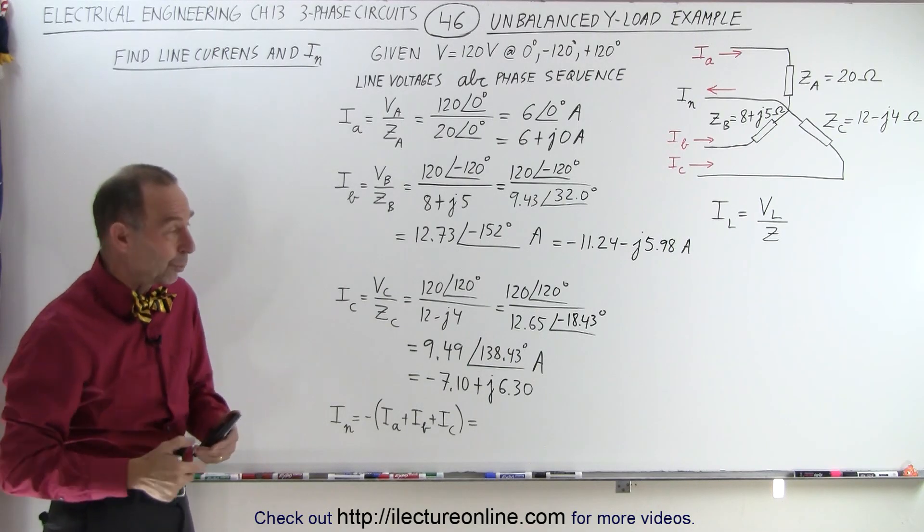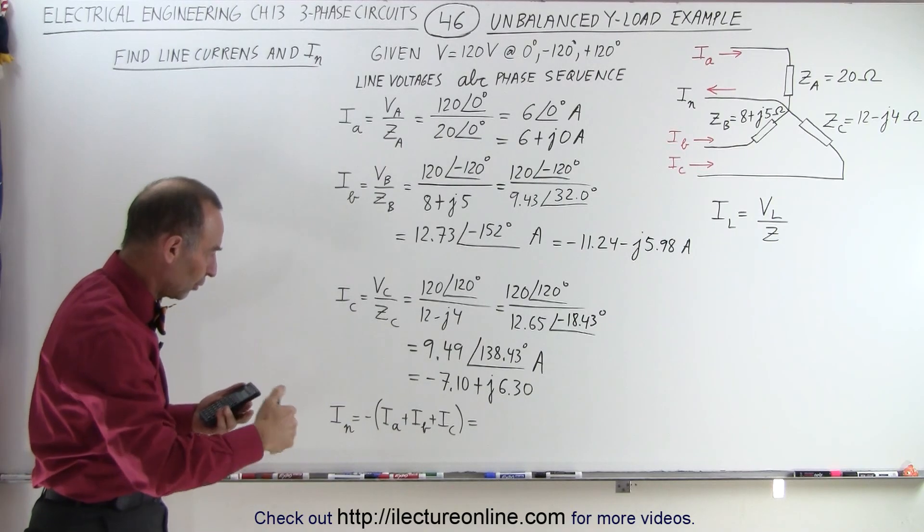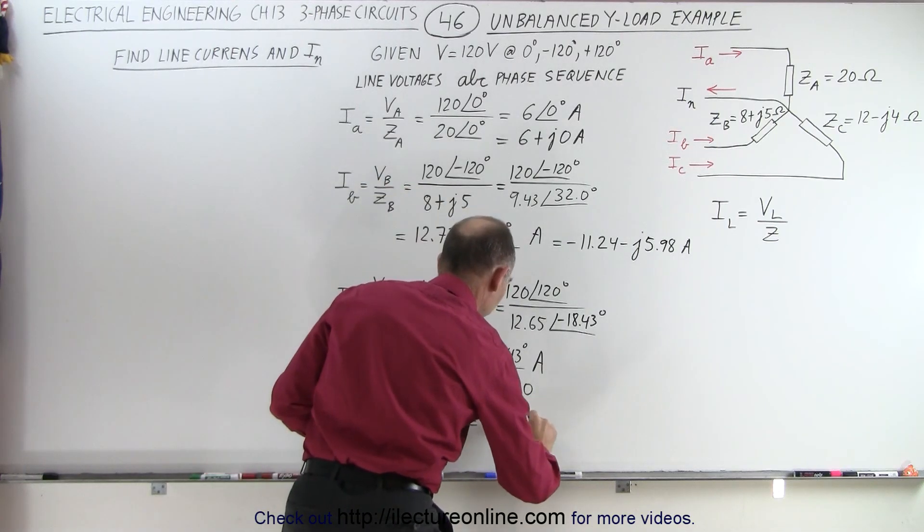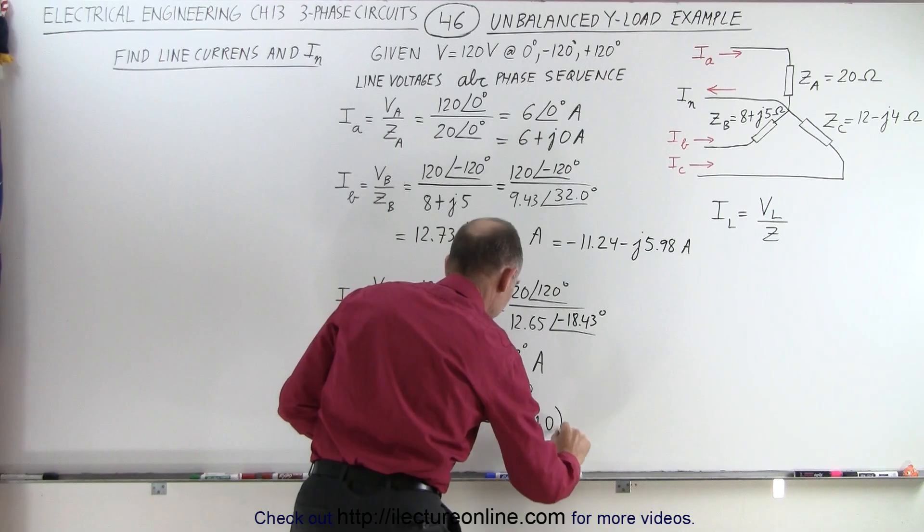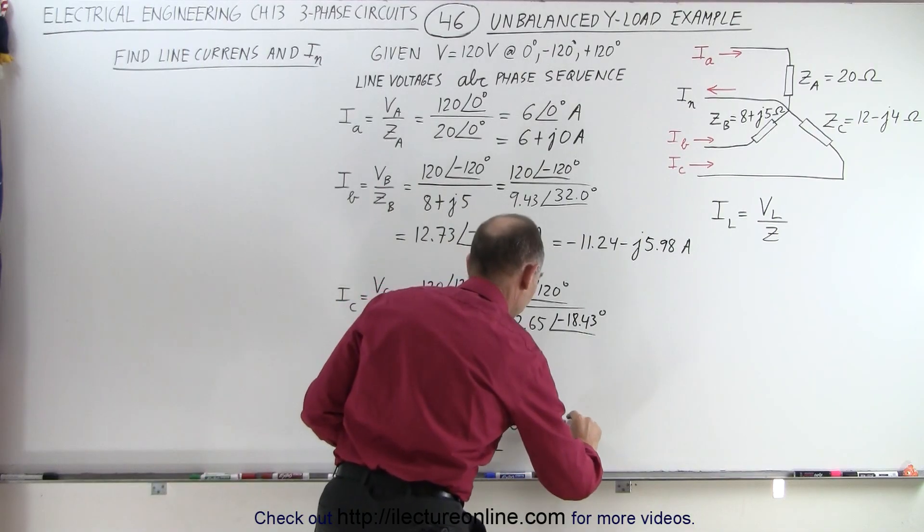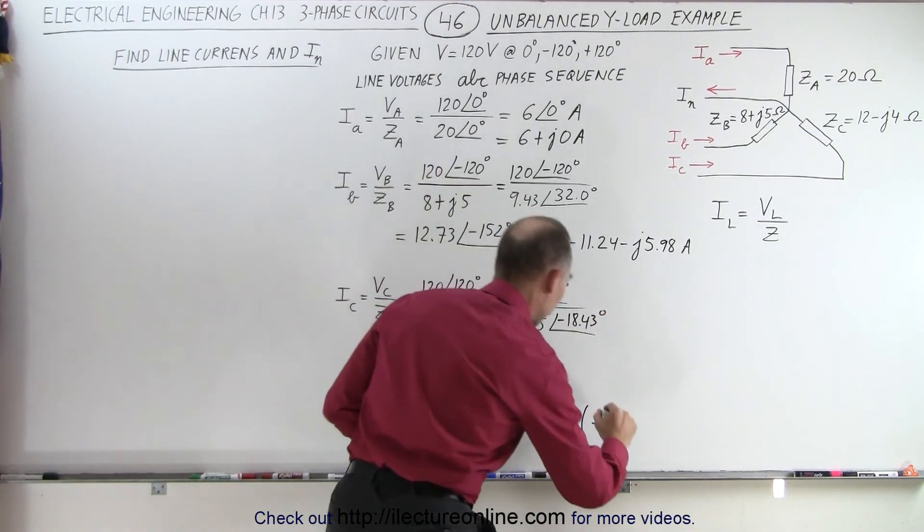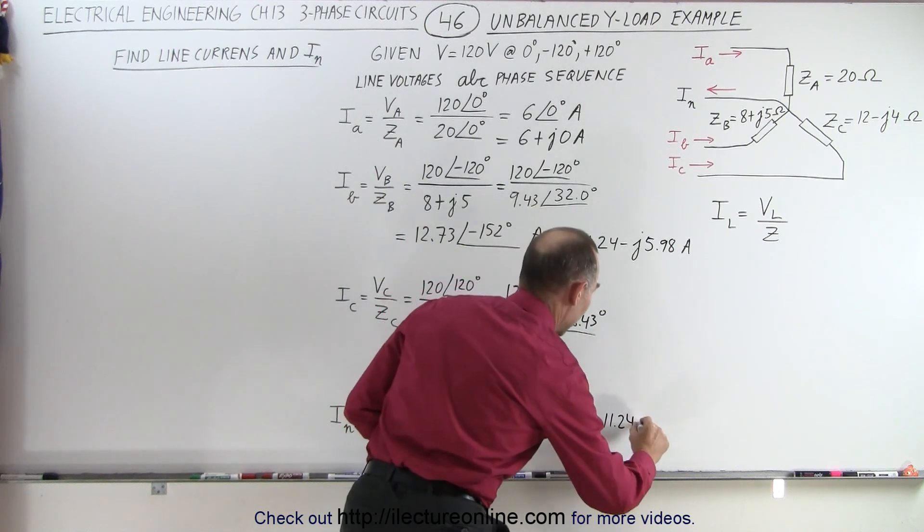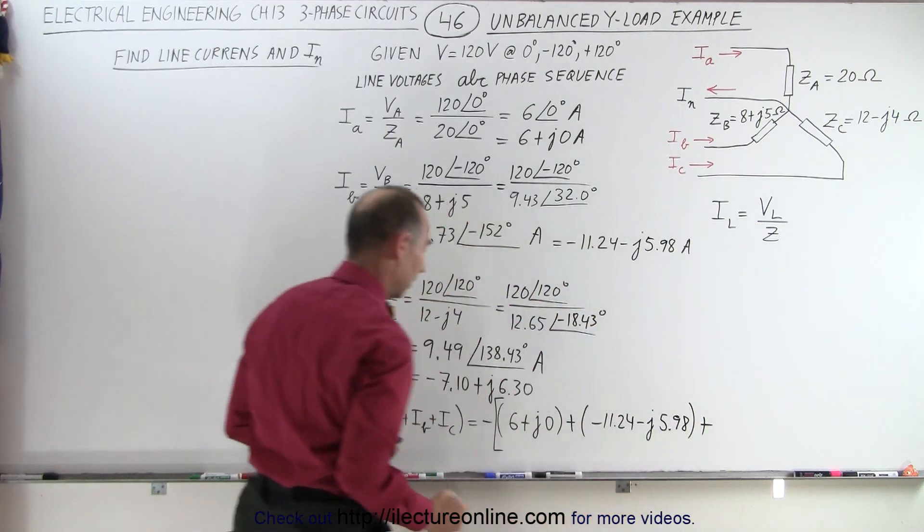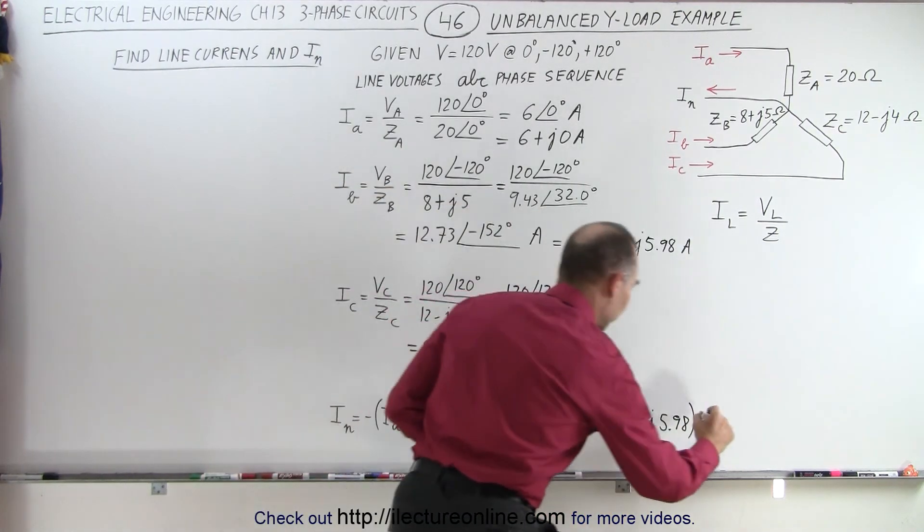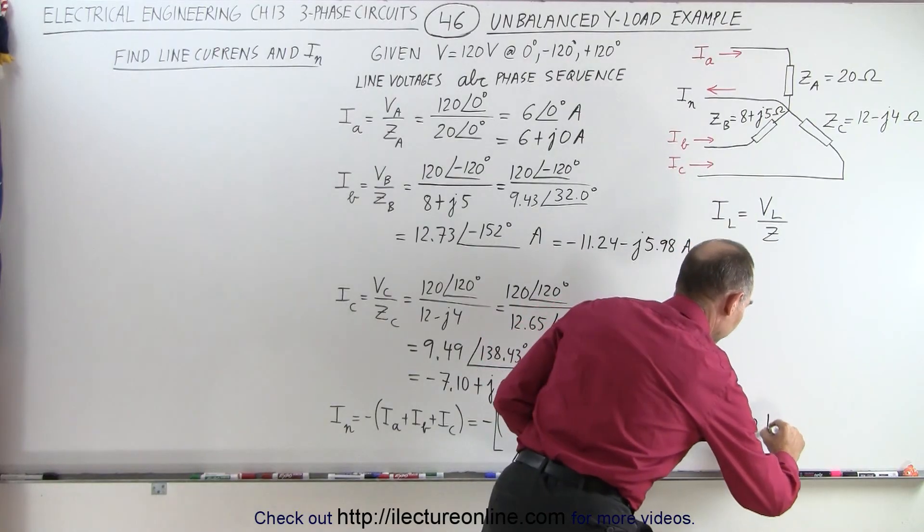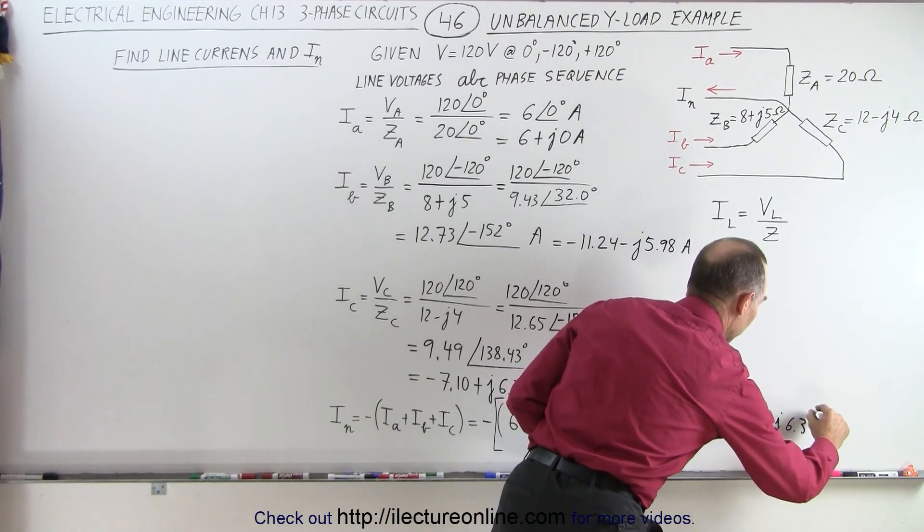Now, what happens when we add them up? We should not get 0, which means we're going to have a return current on the neutral, and it will be equal to minus I A, which would be 6 plus J 0. So, plus I B, that would be plus a minus 11.24, and a minus J 5.98. Plus, and then I C, which is minus 7.10, and that would be a plus J 6.3.